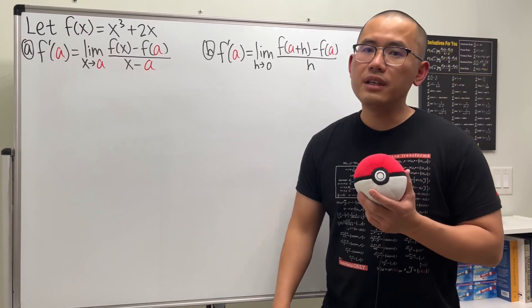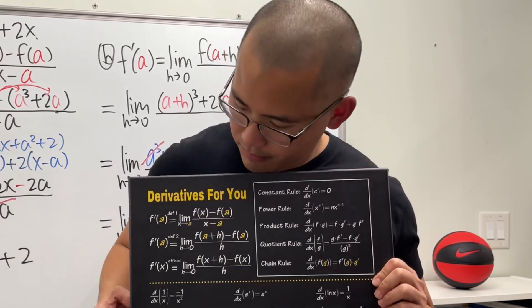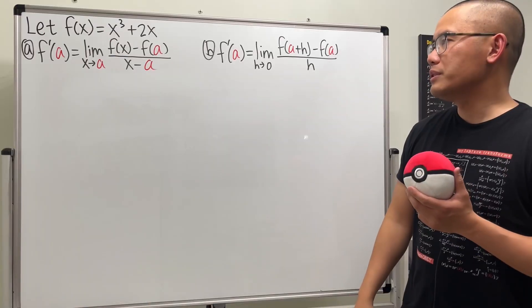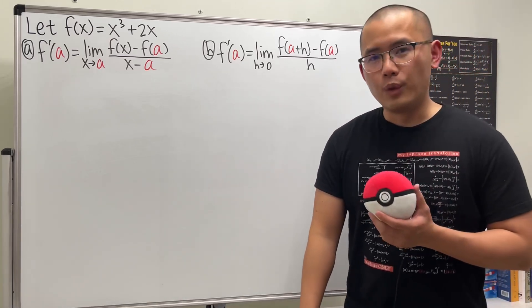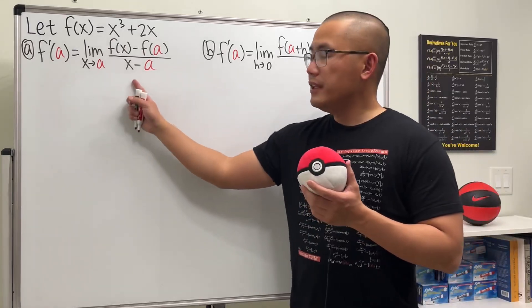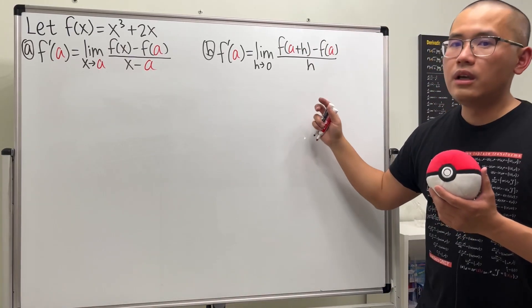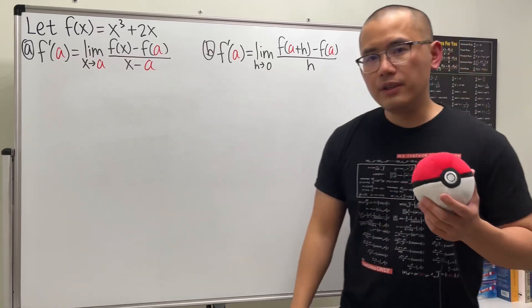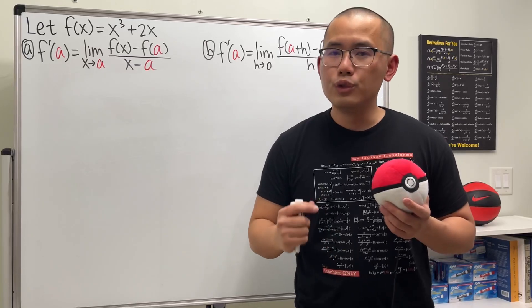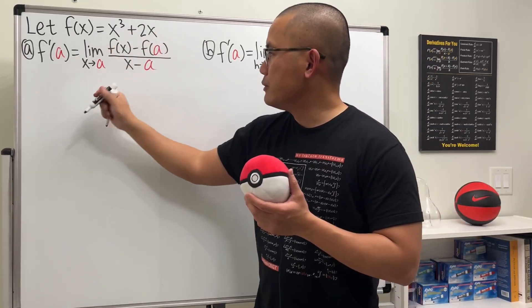As we have seen in our Calc 1 class, we have two versions for the definition of the derivative, namely f prime of a, and they are equivalent. The question is which one is easier. The quick answer is it depends on your preference. This first version is usually harder to factor, and the second one is usually harder to expand. In this video I'm going to use a specific function as an example and demonstrate both.